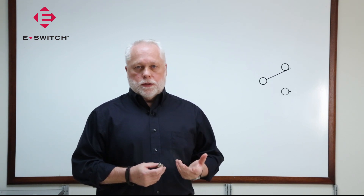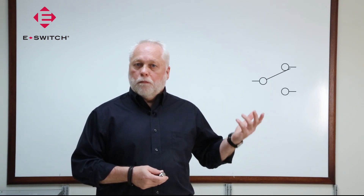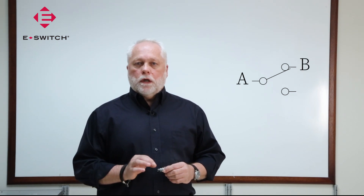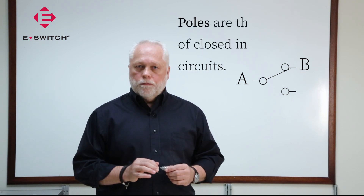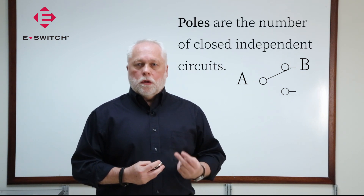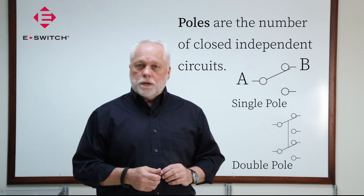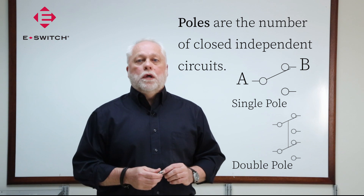Before we get into the actual circuits, I'd like to define what poles and throws really are. A switch, in its basic form, does nothing more than open and close electrical circuits. When the switch closes the circuit, it allows electrical current to flow from point A to point B. When we have a closed circuit in a switch, we call that a pole. If you have two closed circuits at the same time, we call it a double pole. If you have three closed circuits at the same time, we call it a three pole.